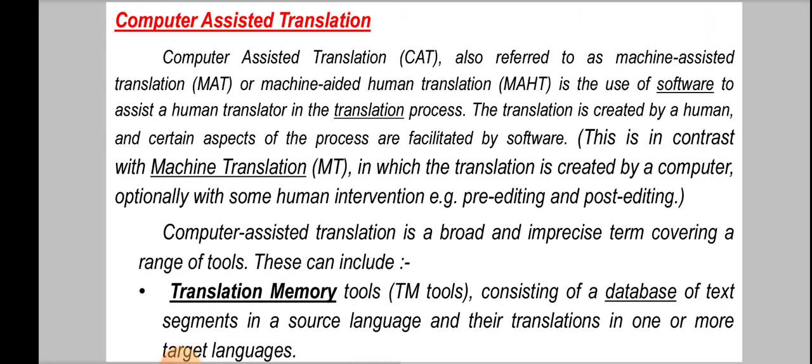Let's discuss about computer assisted translation. Computer assisted translation, or CAT, also referred to as machine assisted translation or machine aided human translation, is the use of software to assist a human translator in the translation process. The translation is created by a human and certain aspects of the process are facilitated by software. Computer assisted translation is a broad and imprecise term covering a range of tools.